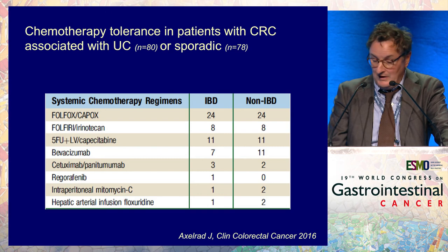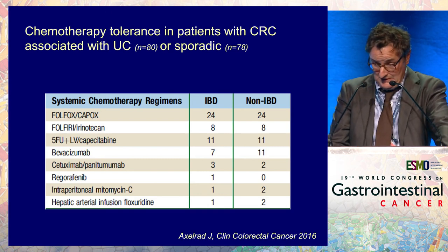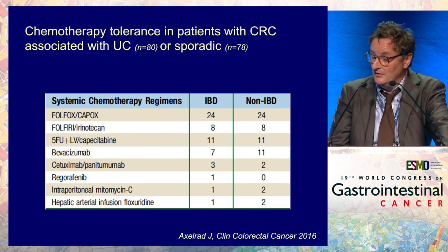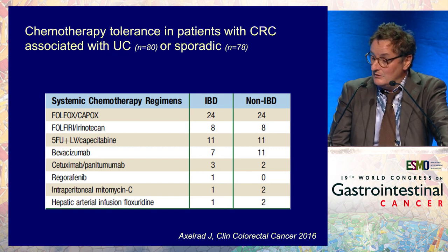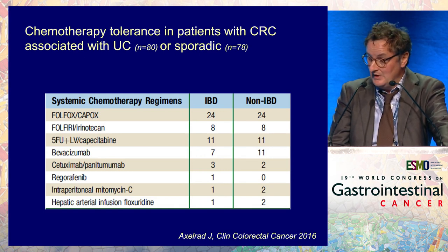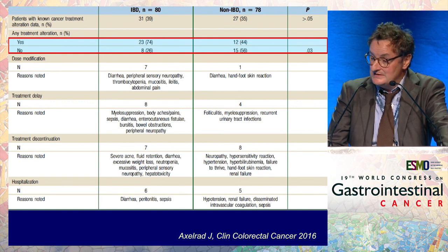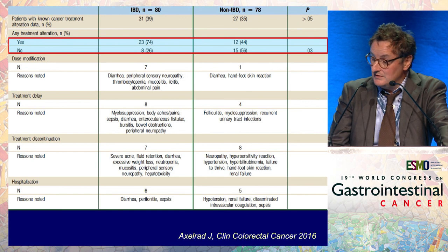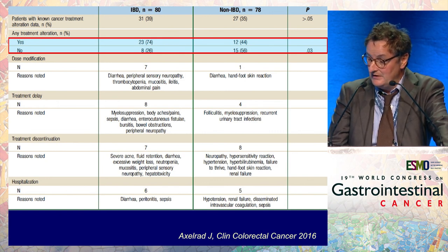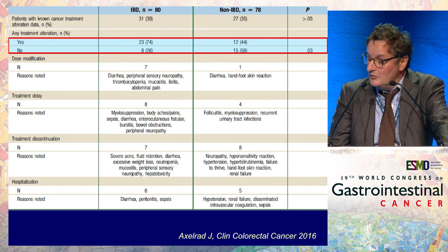There have been only a few studies about chemotherapy tolerance in patients with colorectal cancer associated with ulcerative colitis. In a retrospective study from Mount Sinai Hospital in New York, 80 patients with colitis-associated CRC were matched with 78 patients with sporadic colorectal cancer receiving similar regimens. Remarkably, there were many more treatment alterations in IBD patients — roughly three-fourths compared to less than one-half in sporadic — with diarrhea being the predominant cause of decreased chemotherapy tolerance.